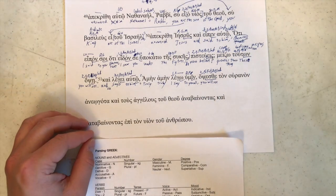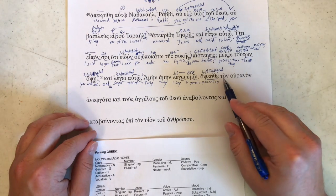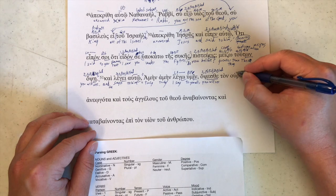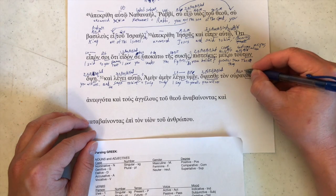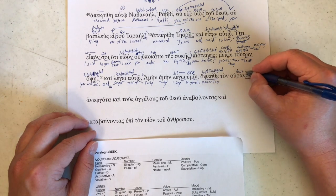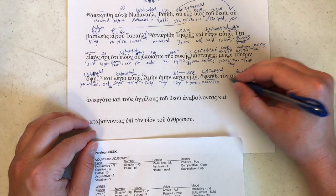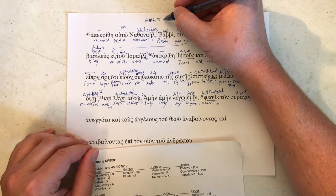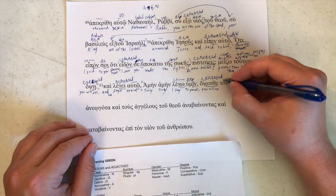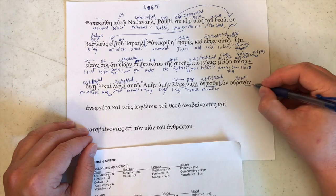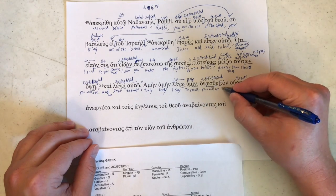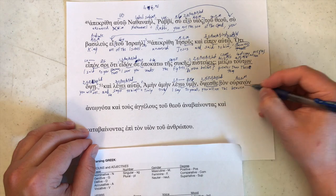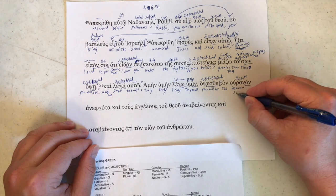And then one would see a direct object, which we find here with ton ouranon. Omicron nu here is accusative singular. Ton tells us that it's masculine. If it were neuter, then it would just be to, just like the nominative form. The heaven, or sky, if you prefer.